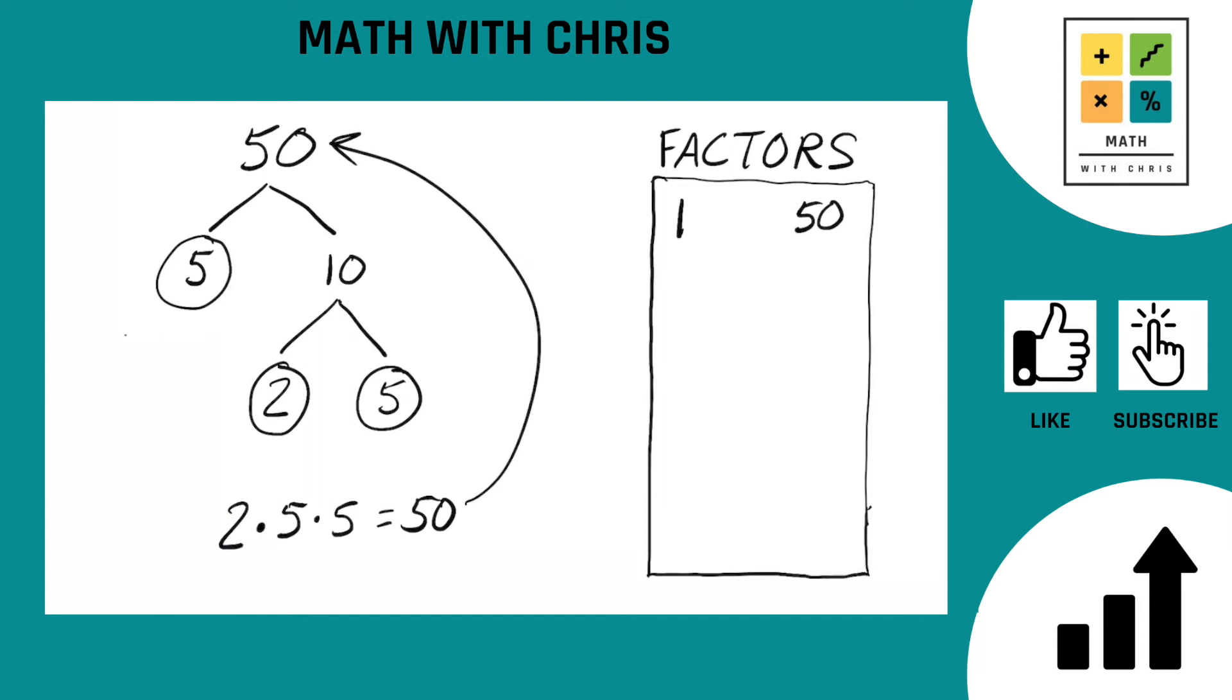We can add the prime factors to our factor bank. That's a 2 and a 5. And anything we hit along the way gets added as well. We saw a 10 briefly there. So 10 gets put into the factor bank.